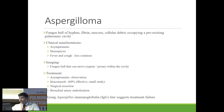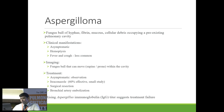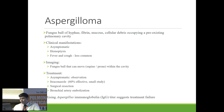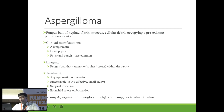Aspergilloma is a fungal ball of hyphae lying in a pre-existing pulmonary cavity, causing hemoptysis episodes; fever and cough are less common. To confirm, the fungal ball should move in both supine and prone positions — if it is not mobile, it is not likely to be an Aspergilloma. For asymptomatic patients, observe. Otherwise, antifungal therapy with itraconazole, surgical resection, or if hemoptysis is massive, bronchial artery embolization. Rising IgG titers suggest treatment is failing.